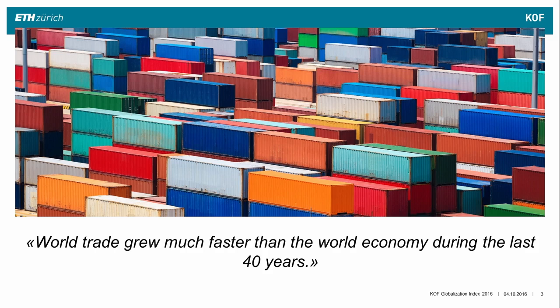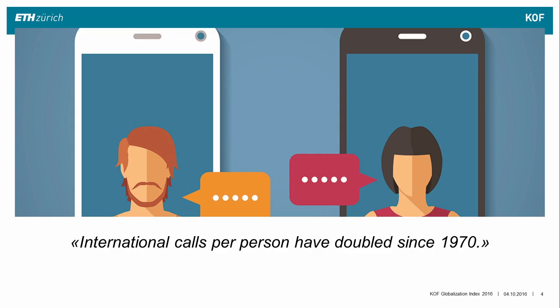The world has economically become more and more integrated during the last 40 years. World trade grew much faster than the world economy. The average trade to GDP ratio per country was 54% in 1970 — it is almost 100% today. Not only goods and services but also information is more and more shared across borders. International calls, for example, have doubled since the 1970s.